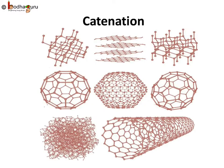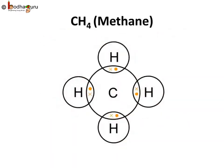Hello everyone. We already know that carbon has the unique ability to form bonds with other atoms of carbon, giving rise to large molecules. This property is called catenation. So let us see how to arrive at the structures of simple carbon compounds. Because of catenation, carbon can form an unimaginable number of compounds.